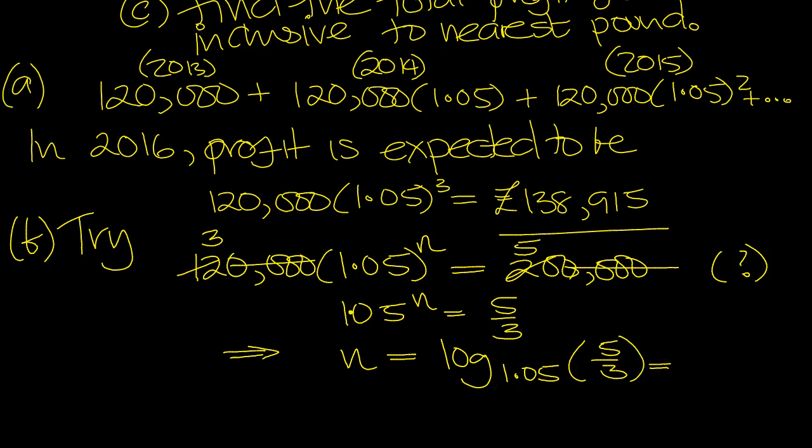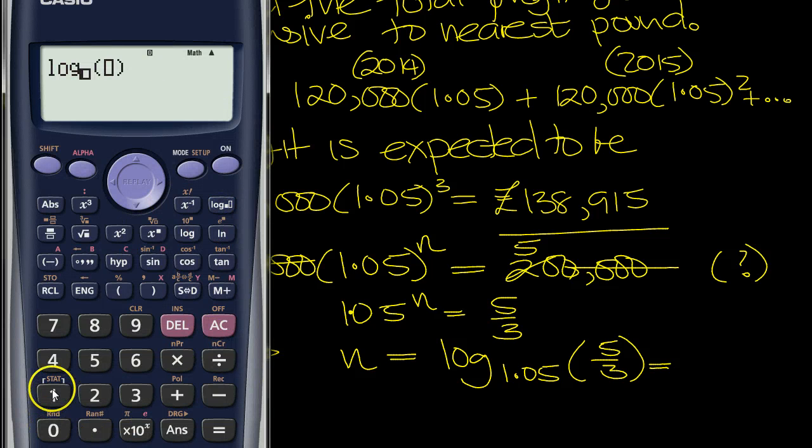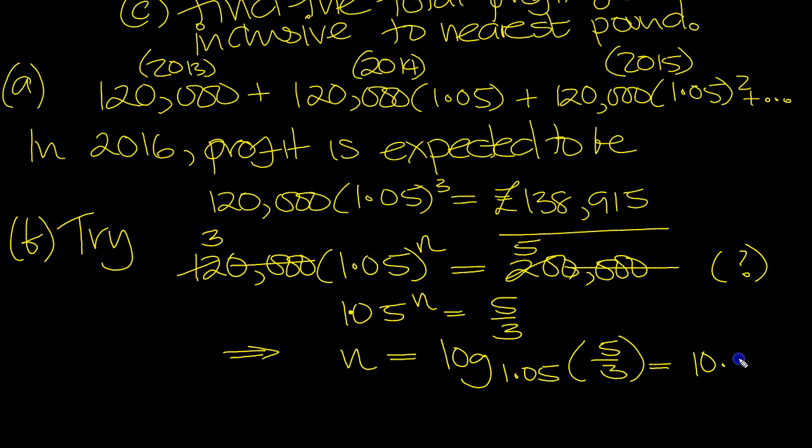And let's tap that in the calculator then. So we've got log 1.05 of the number five thirds. Equals 10.469. So 10.46 and so on.